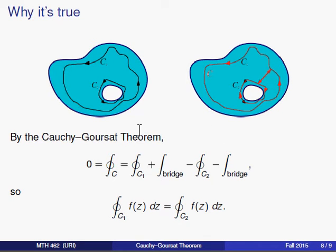So by the Cauchy-Goursat theorem, what this says then is that since the function is analytic at every place inside and on this red curve, the integral along that curve should be zero.